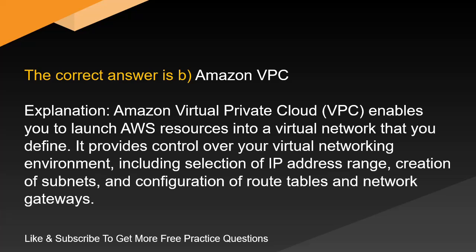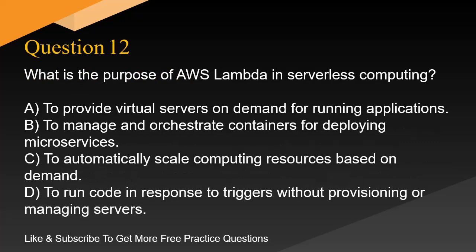Explanation. Amazon Virtual Private Cloud, VPC, enables you to launch AWS resources into a virtual network that you define. It provides control over your virtual networking environment, including selection of IP address range, creation of subnets, and configuration of route tables and network gateways.